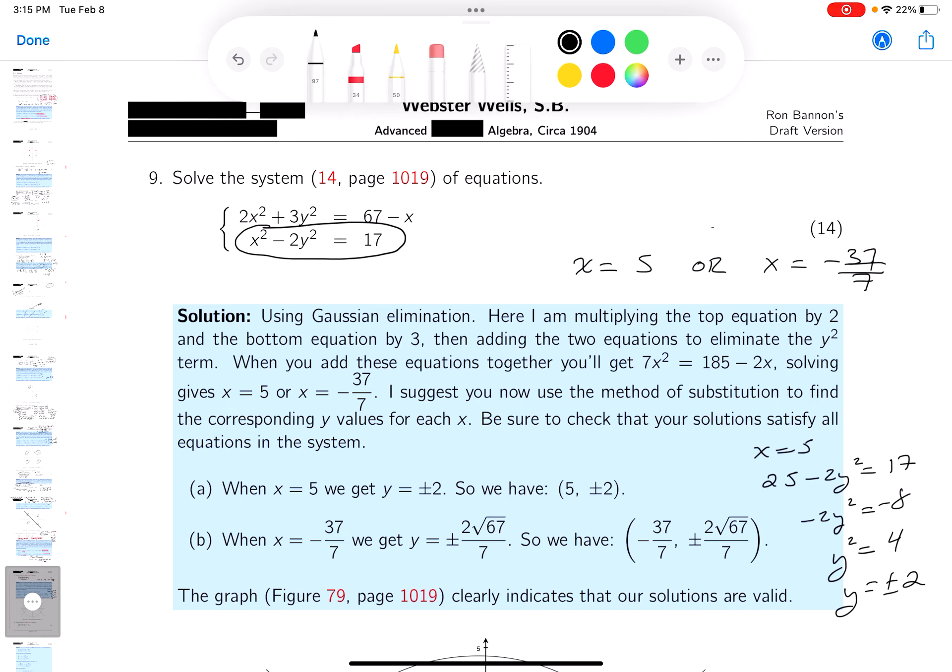So I got two really simple solutions from this. 5 comma 2 and I'm also going to get 5 comma minus 2. I want to point out those answers are listed over here for me. So I feel pretty good about that. I'm done with that part.